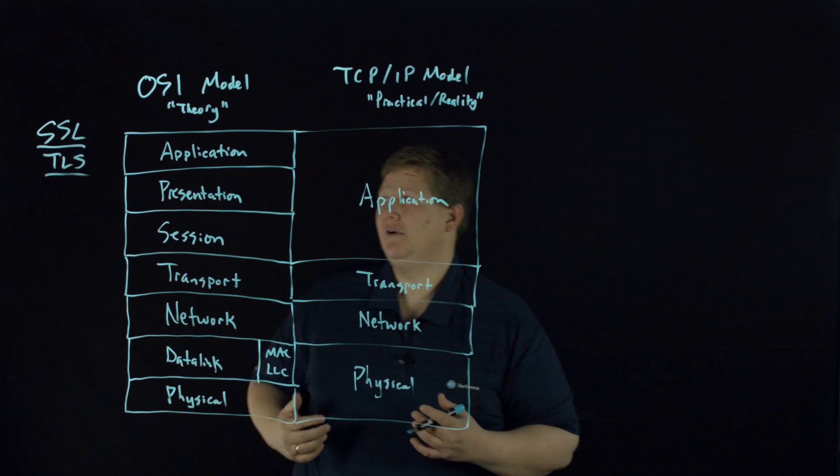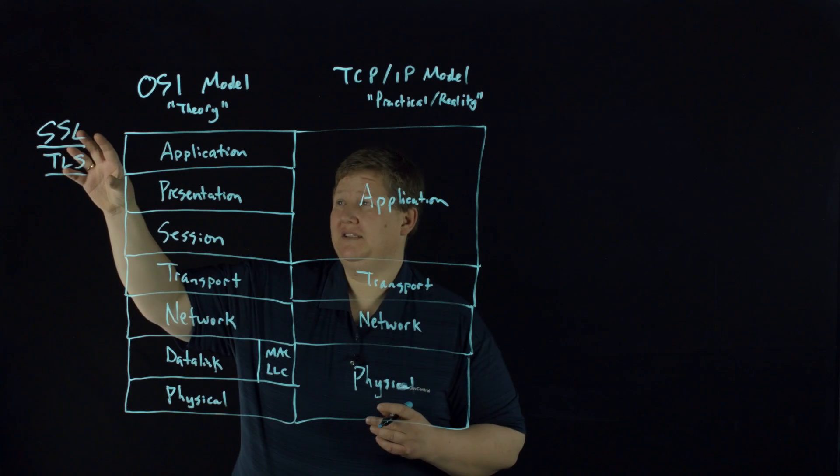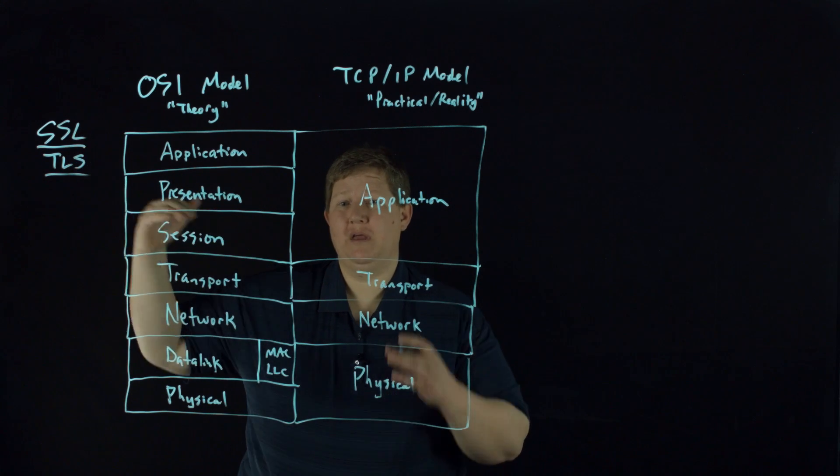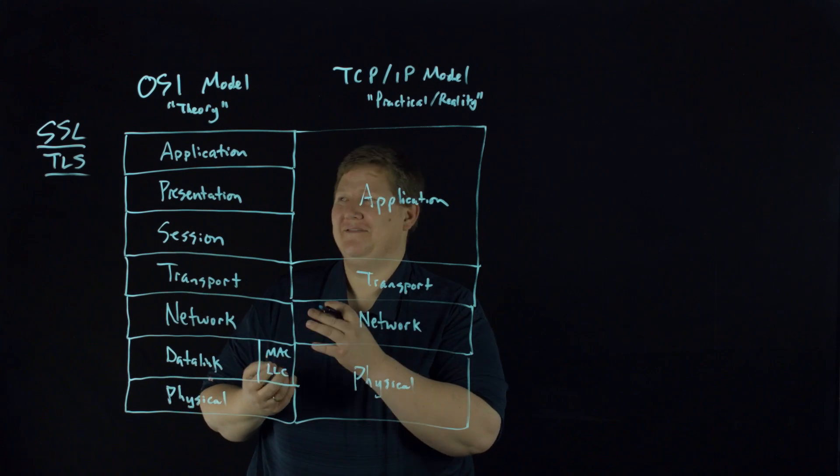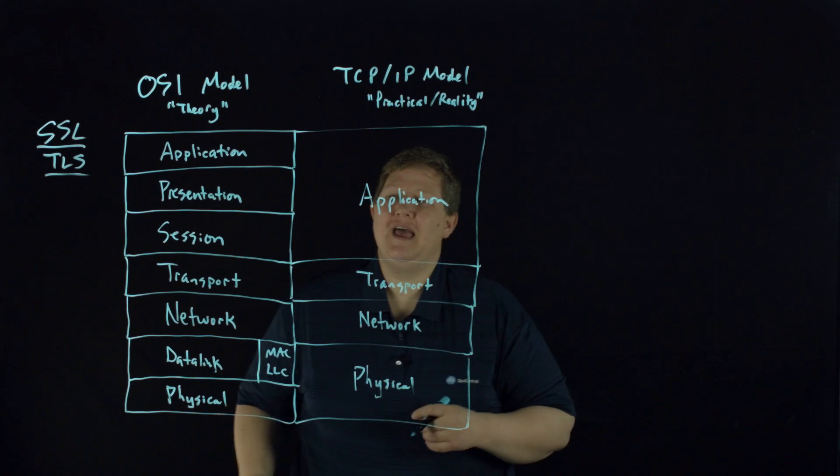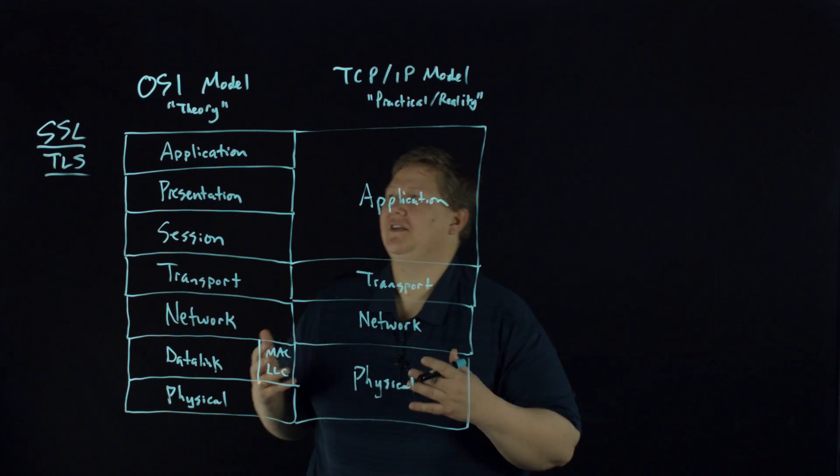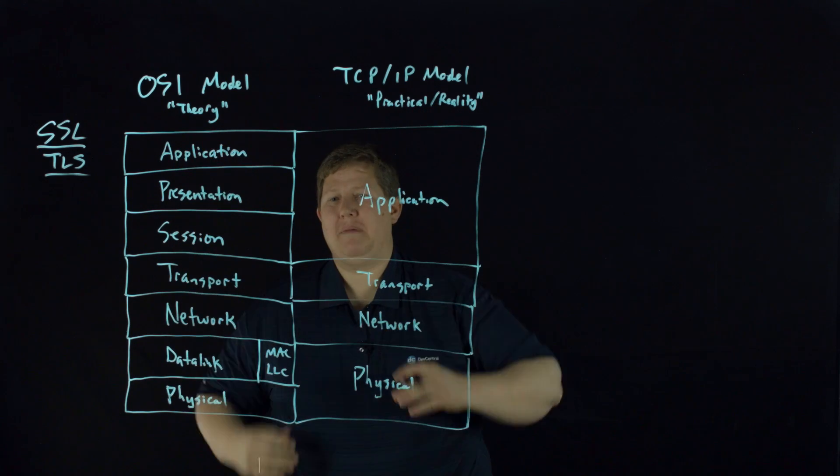But it's using handshakes to do additional things like encryption. So it would really sit above layer five at layer six and seven. However, applications are also using SSL and TLS as a transport mechanism. So that would have to cap at layer four. So what is it? Is it layer four? Is it layer five? Is it layer six? Or is it layer seven? And that just leads to the conversation that again, these are models.